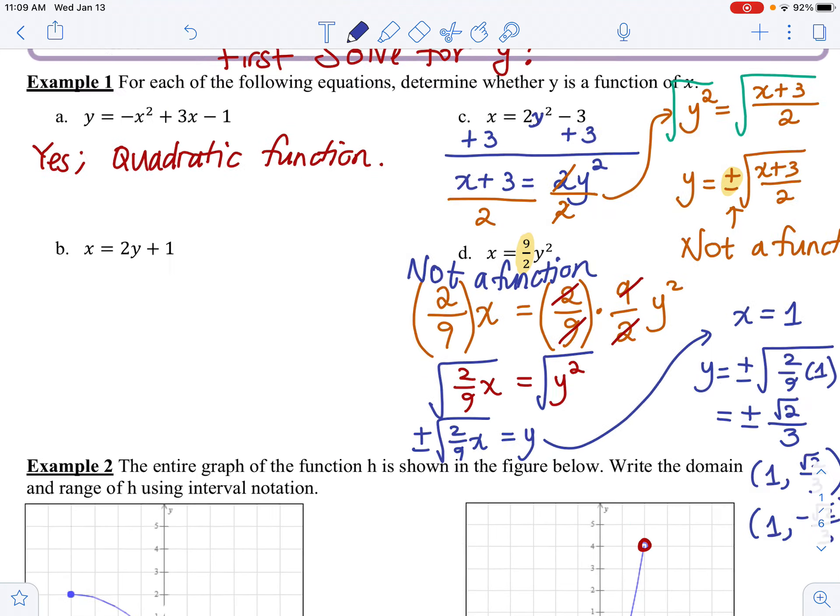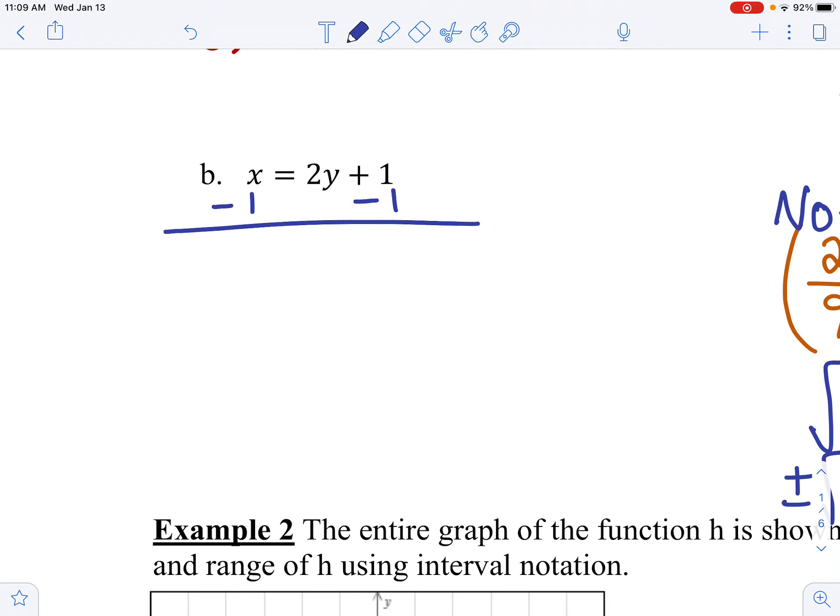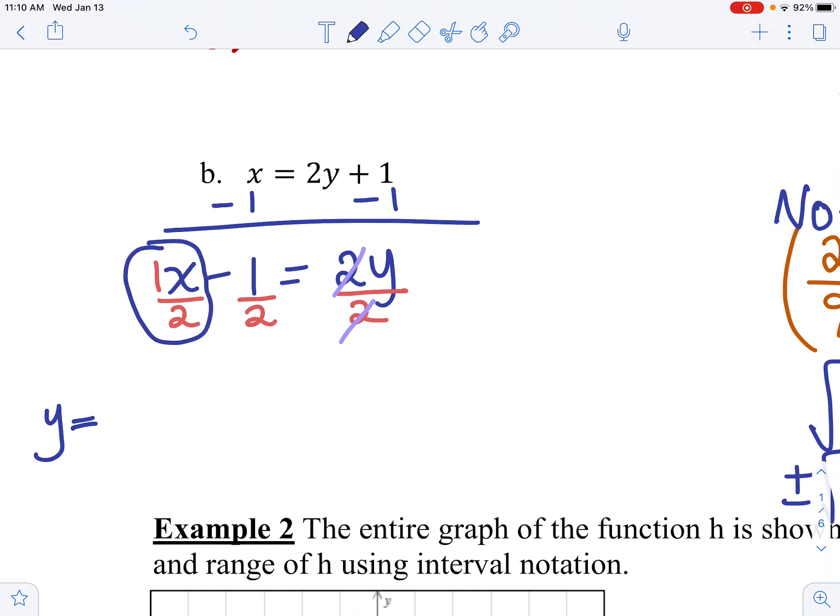Let's look at the very last one in part B. I need to solve for y first. Subtract 1 from both sides. I get x minus 1 is equal to 2y. To solve for y, I need to get rid of this 2. So let's divide everything by 2. I divide everything by 2, leaving me with y equals the first term is 1 over 2x, and then this part is just minus 1 half.